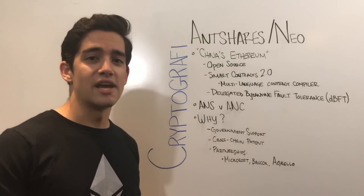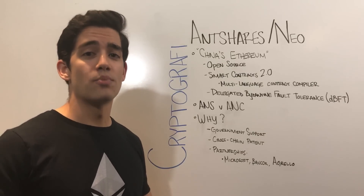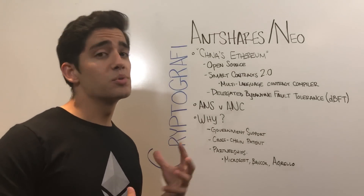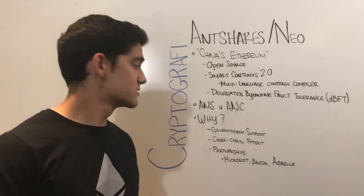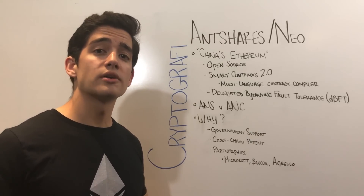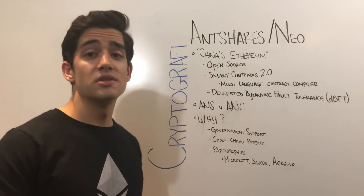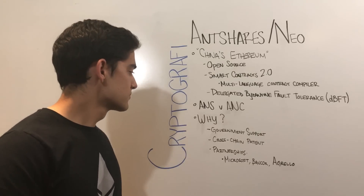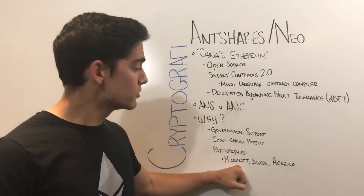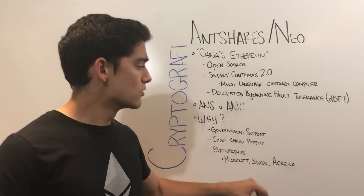And why should you be interested in AntShares or NEO? Well, first off, they have government support. Currently in China, they're using their blockchain to map real-world assets. Additionally, they have a cross-chain patent, which allows them to work across different blockchains — we could see them working with Bitcoin or Ethereum in the future, which is pretty cool. And finally, they've got some really strong partnerships, from enterprise people like Microsoft, to newer, smaller ICOs like Bancor and Agrela.